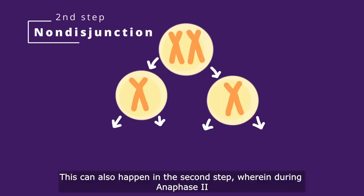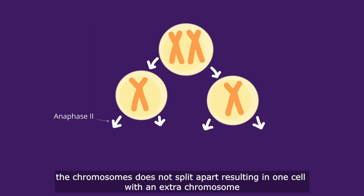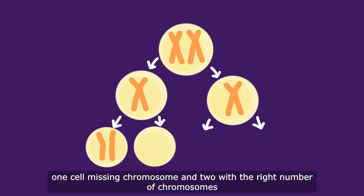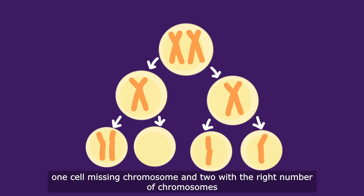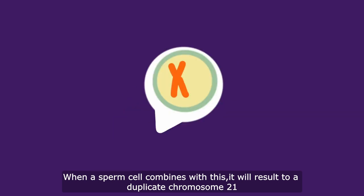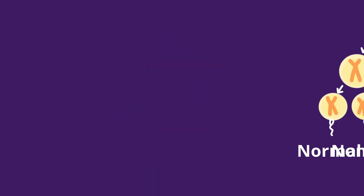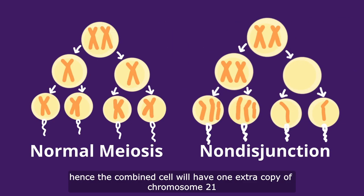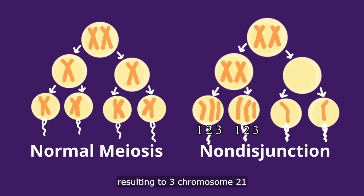This can also happen in the second step, wherein during anaphase 2, the chromosomes do not split apart, resulting in one cell with an extra chromosome, one cell missing a chromosome, and two with the right number of chromosomes. When a sperm cell combines with this, it will result in a duplicate chromosome 21. Hence, the combined cell will have one extra copy of chromosome 21, resulting in three copies of chromosome 21.